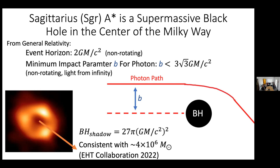If the impact parameter is large enough, the photon is just bent. As you get smaller, at some point it will do a full circle and escape. Getting closer still, it does several circles and escapes. But there is a critical one corresponding to an infinite number of circles — below that, it falls in. So when you look at this image, you're not looking directly at the event horizon; you're looking at the region where photons aren't able to escape — this gap or shadow.